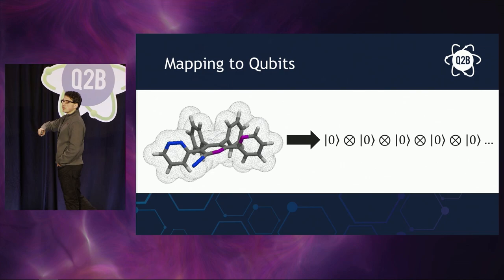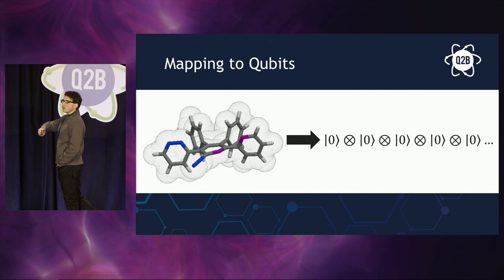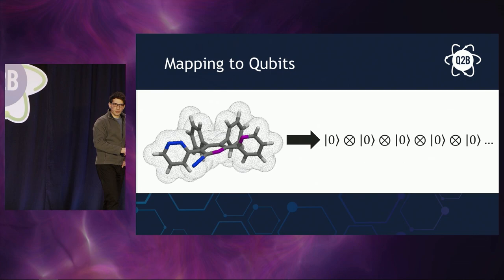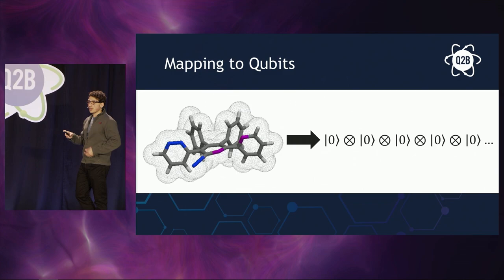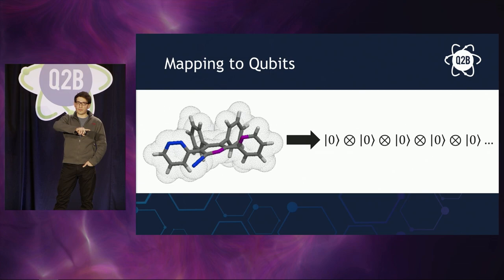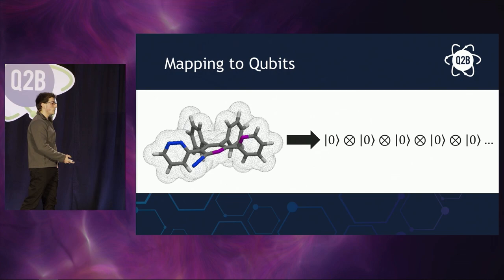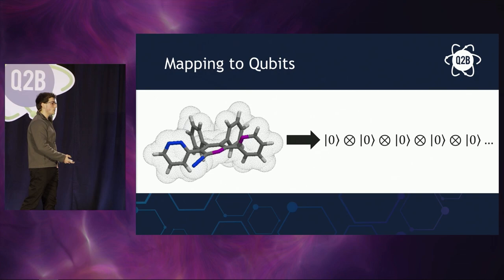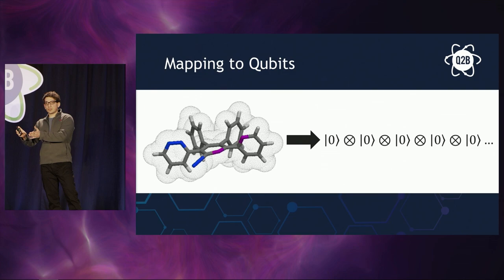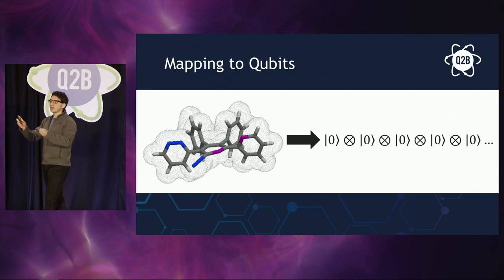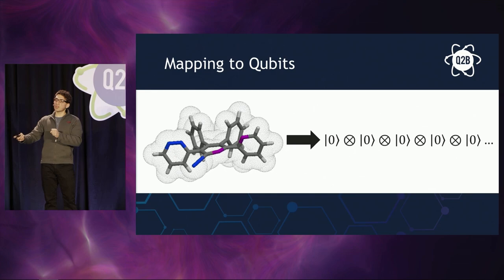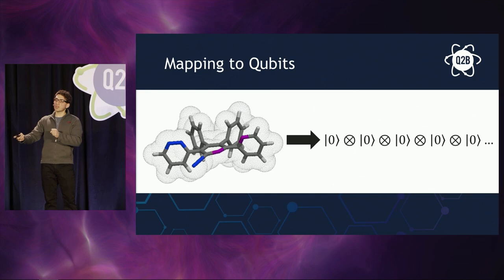One thing I've skipped over is that molecules are not the same as qubits on a quantum computer — at least not naively. What that means is that you effectively have to do a transformation from the space of states available for a molecule into the space of states that quantum computers can simulate. This is called the mapping to qubits. Once you formulate your problem as a molecular problem, there are certain ways to transform it into a quantum computational problem, where instead of applying electron interactions you apply quantum gates. There are well-understood ways of doing that.